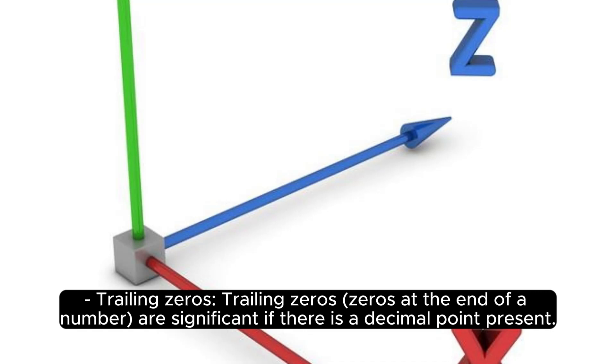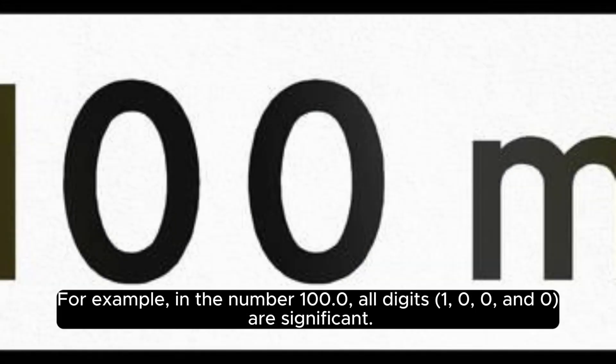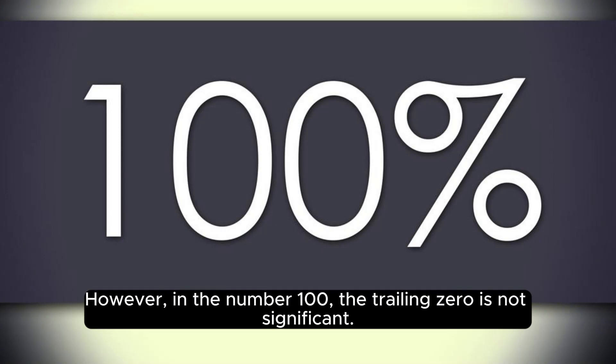Trailing zeros: Trailing zeros, zeros at the end of a number, are significant if there is a decimal point present. For example, in the number 100.0, all digits 1, 0, 0, and 0 are significant. However, in the number 100, the trailing zeros are not significant.